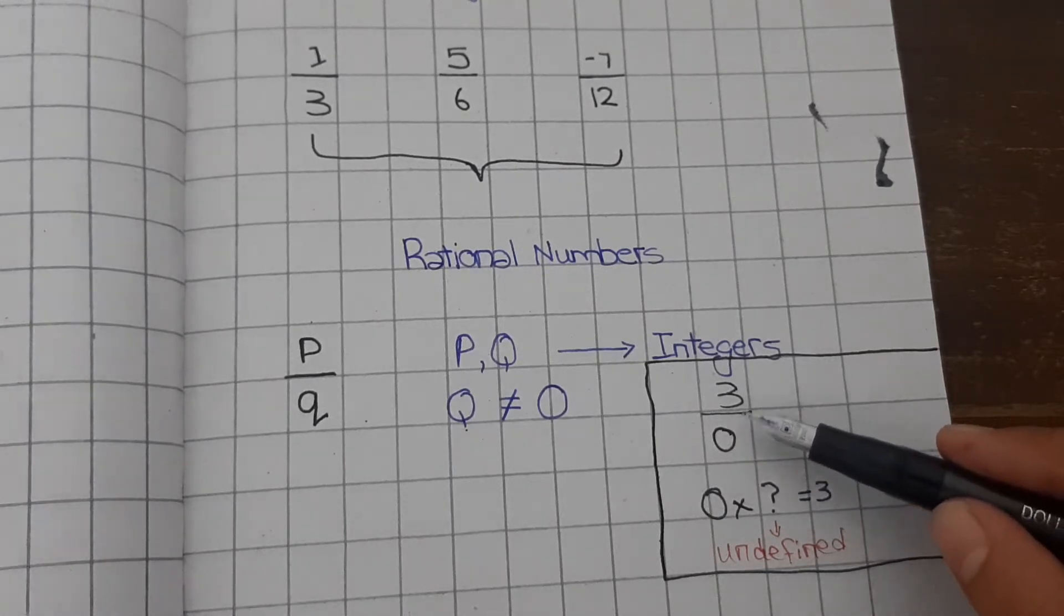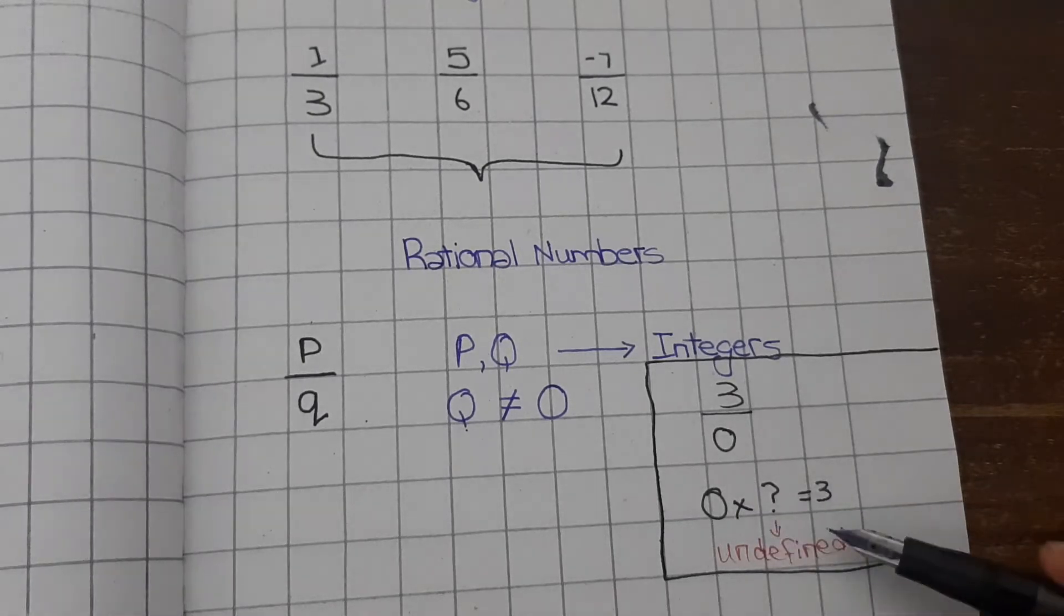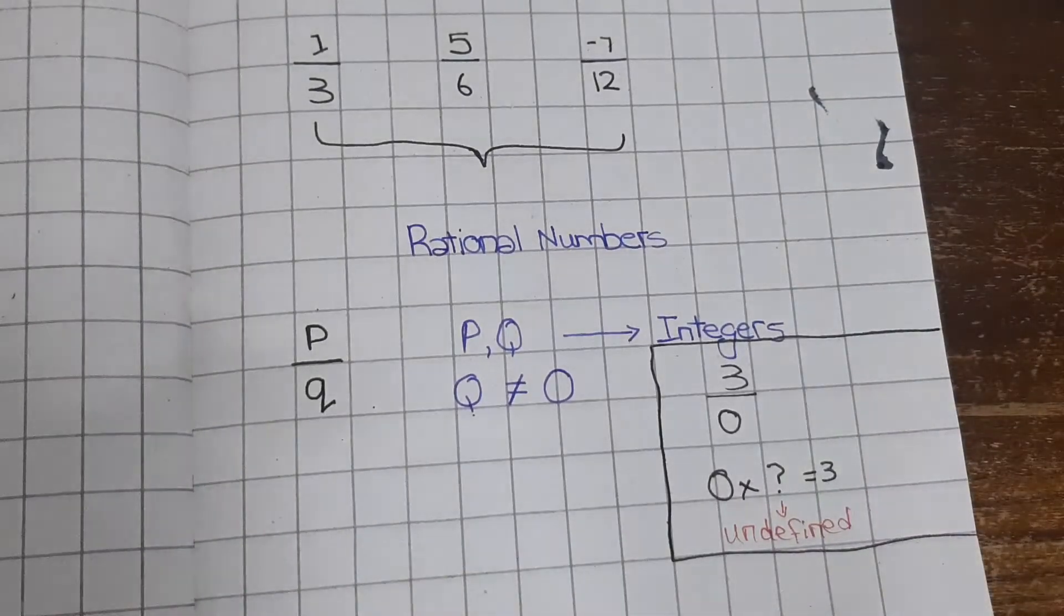...it will become 3 divided by zero. Zero will be divided with what? It cannot be done like this. So this is undefined. Rational numbers can also come in values like these.